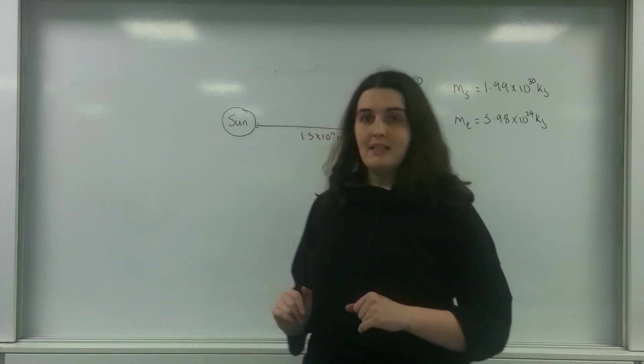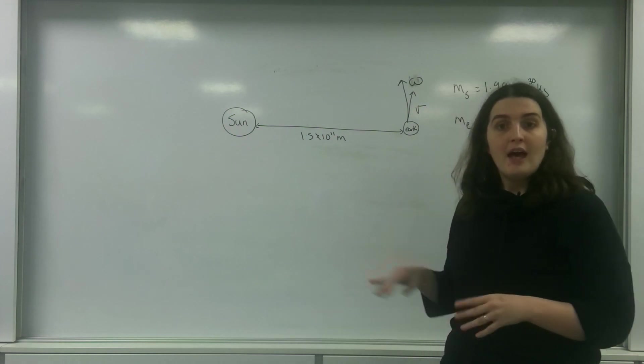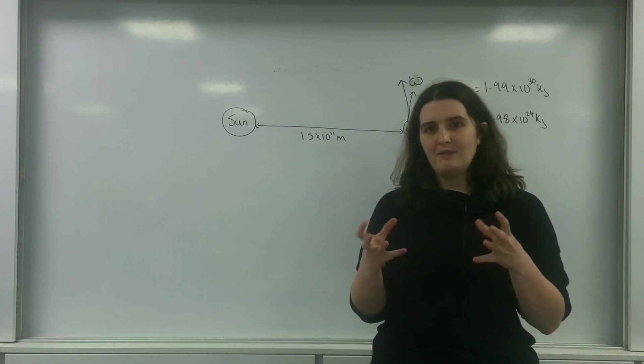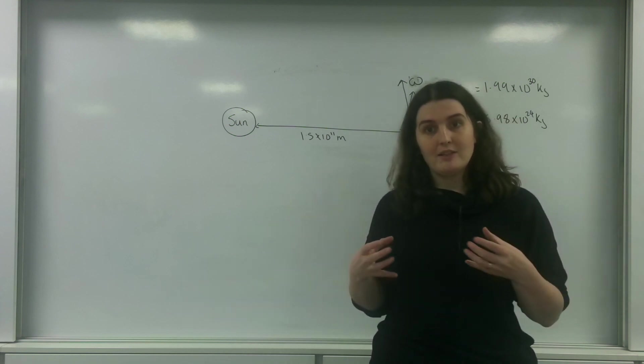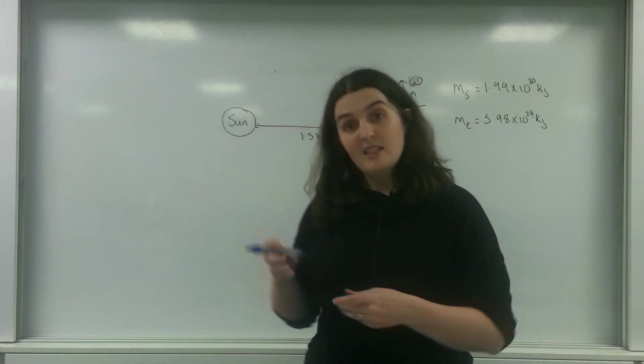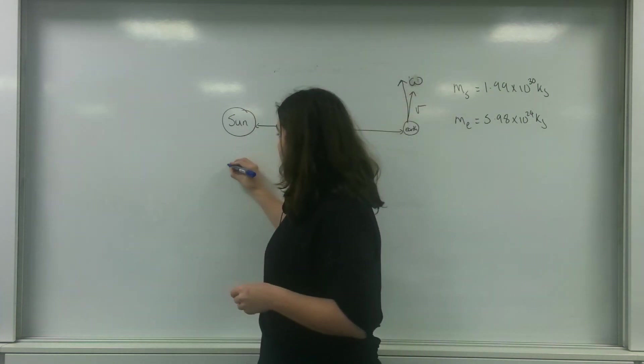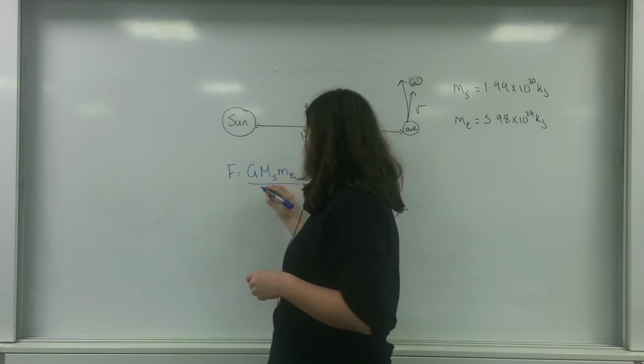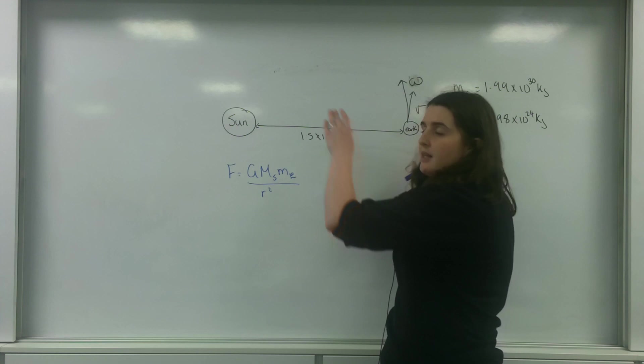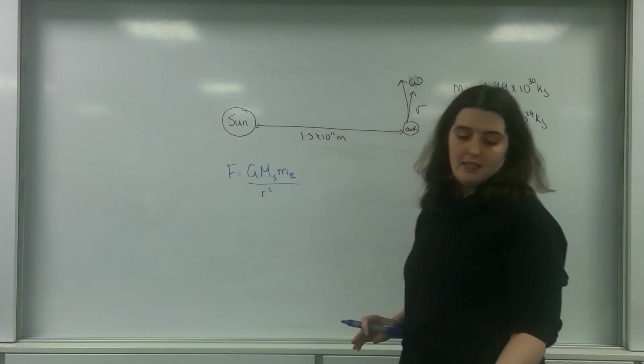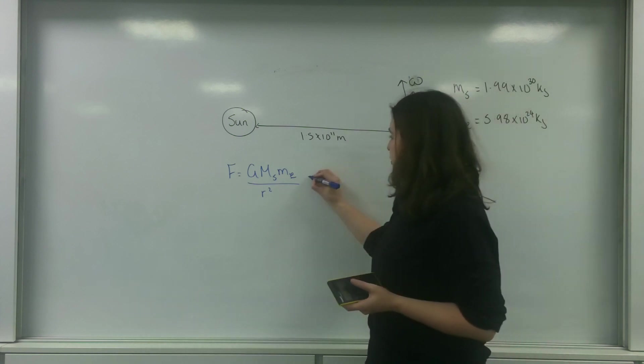What I have here is the Sun and the Earth, and they are attracting each other through gravitational fields. The force they're feeling is because they're being attracted due to their gravitational fields. I can calculate this force using Newton's law of gravitation. So this force is G times mass of the Sun times mass of the Earth divided by r squared. The radius between the Sun and the Earth is one astronomical unit, which is 1.5 times 10 to the 11 meters.